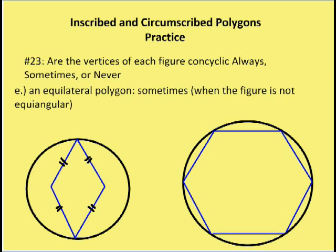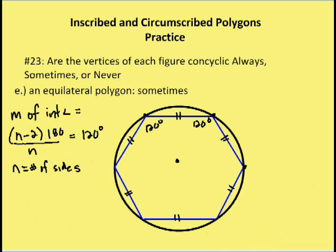Now let's talk about equiangular polygons. I'll use a regular hexagon to demonstrate why it is always concyclic. The measure of the interior angles equals (n − 2) × 180 divided by n. For a hexagon: (6 − 2) × 180 = 720, divided by 6 gives 120 degrees for each interior angle. So each interior angle of the regular hexagon is 120 degrees.